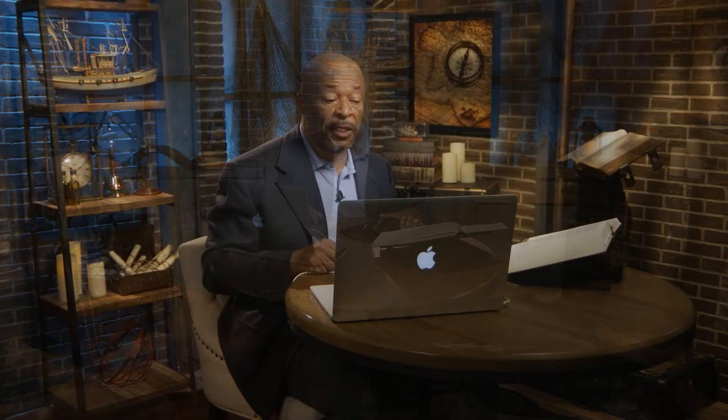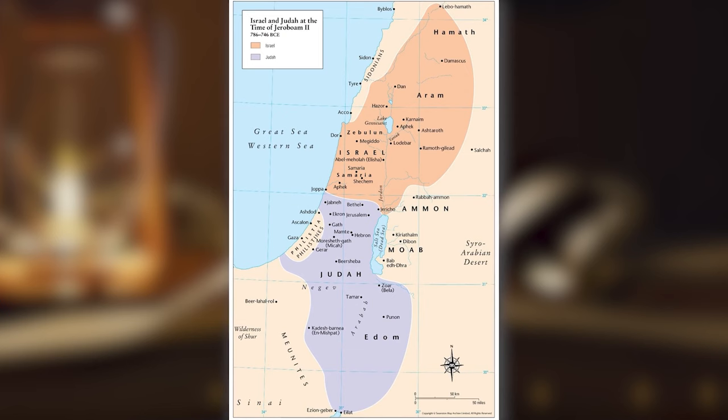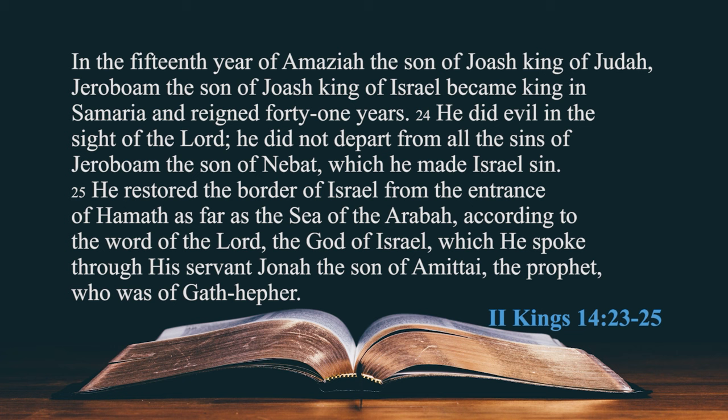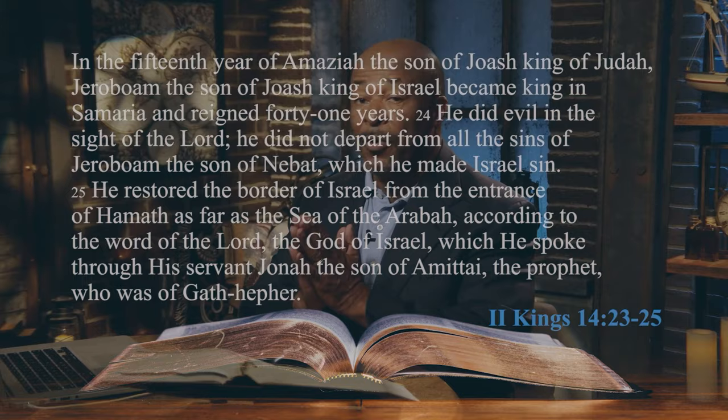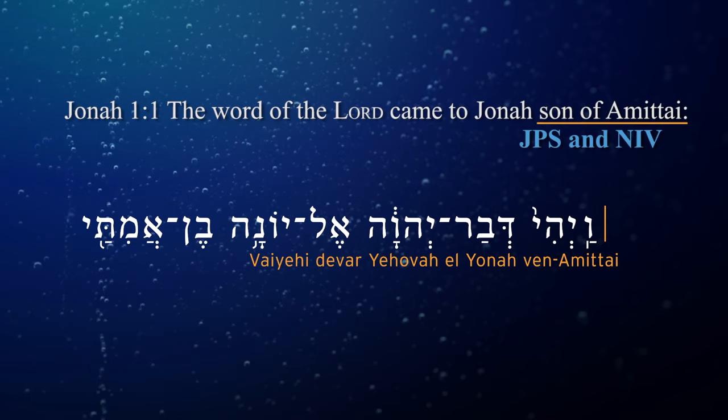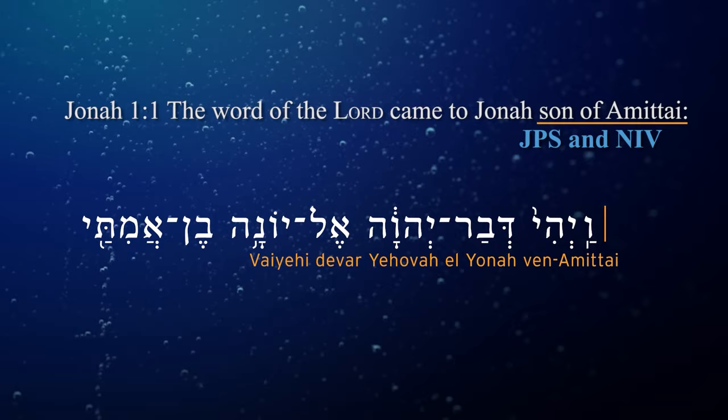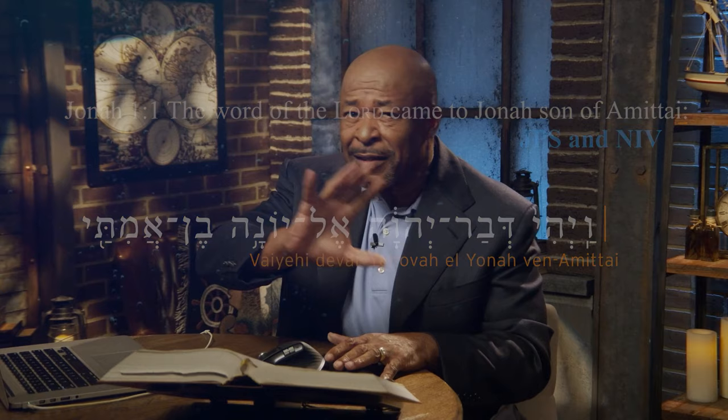'He did evil in the sight of Yehovah. He did not depart from all the sins of Jeroboam, the son of Nebat. He restored the border of Israel from the entrance of Hamath as far as the sea of the Arabah, according to the word of Yehovah, the God of Israel — which he spoke through his servant Yonah, son of Amittai, the prophet who was of Gath-Hefer.' We now know this is the same Yonah found in the book of Jonah.